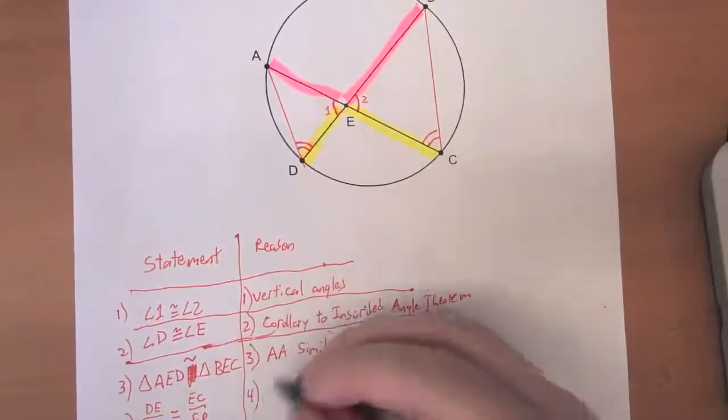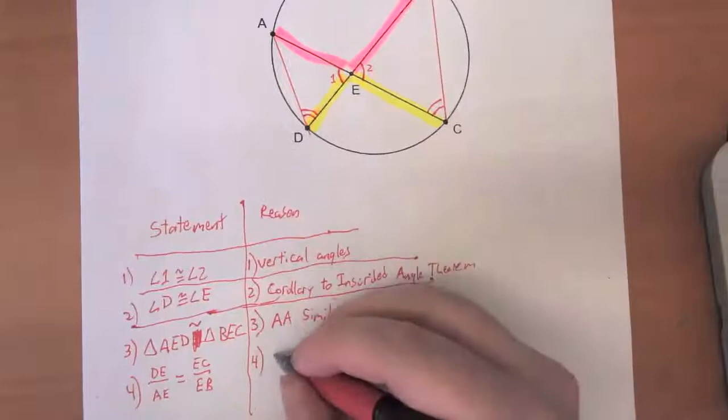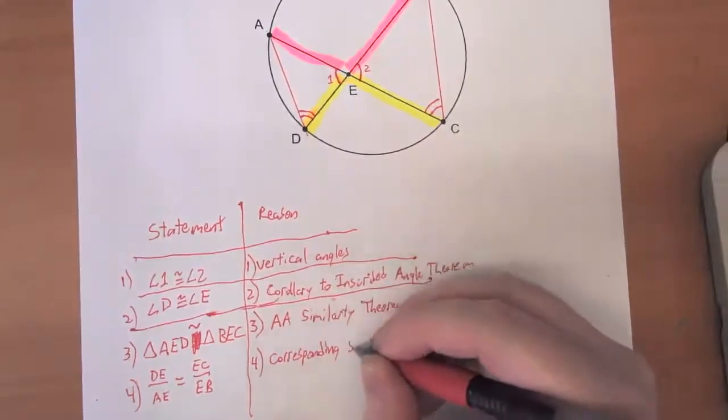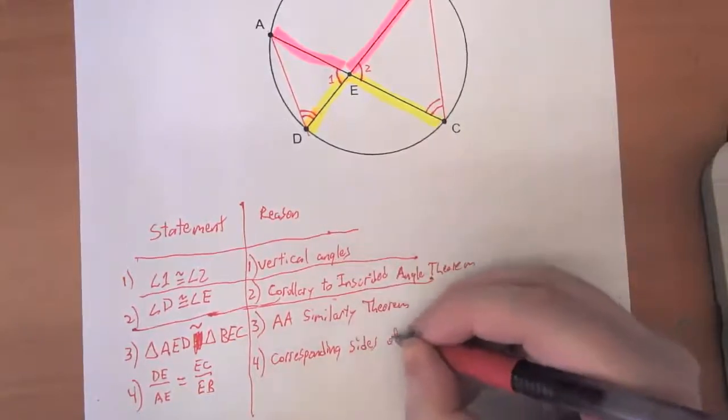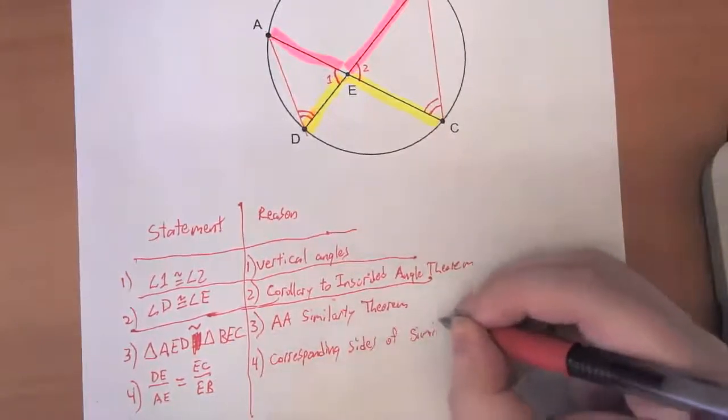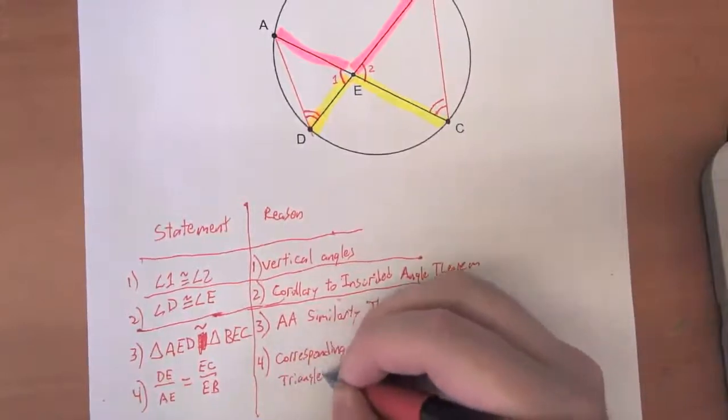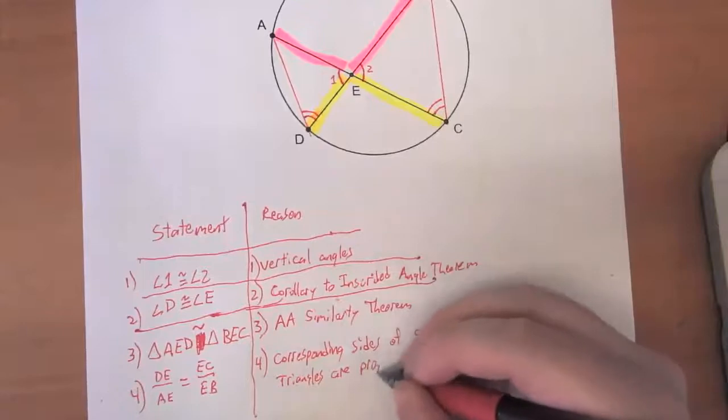And for my reason for this, I am going to write that corresponding sides of similar triangles are proportional.